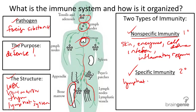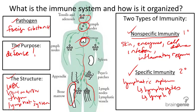The lymphatic system works with lymphocytes, which are a type of white blood cell, lymph nodes, and the spleen, to destroy pathogens and filter blood and lymph.